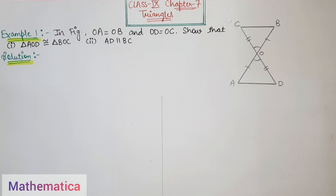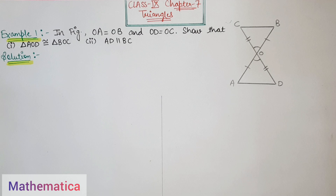Hello everyone, welcome back to my channel Mathematica. Today in this video we are going to start examples of chapter 7, Triangles, of class 9 from the NCERT textbook. The first example is: in the figure, OA equals OB.